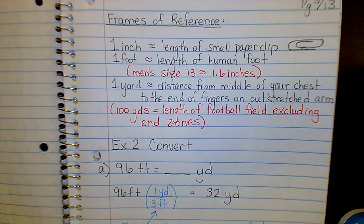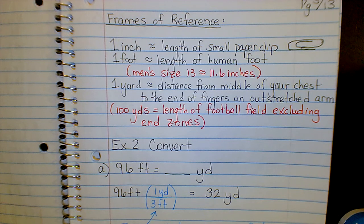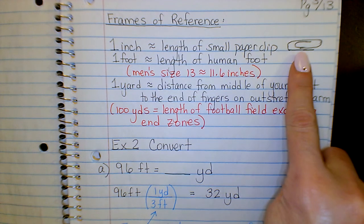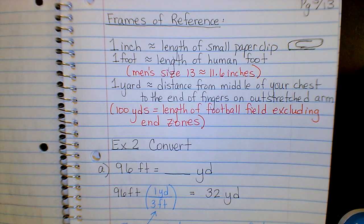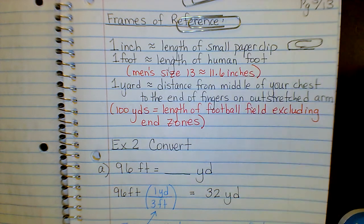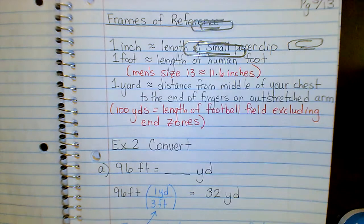It's good to have a frame of reference for these units. For instance, how long is an inch? Some people have no idea — the woman who cuts my hair can verify that people will say 'take off six inches' and then cry in the chair. An inch is about the length of a small paper clip. It's also the distance between two knuckles on your finger — from this knuckle to this one is about an inch.